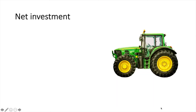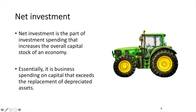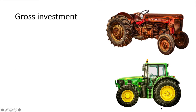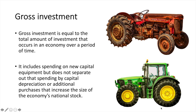Net investment is the part of investment spending that increases the overall capital stock of an economy — essentially, it is business spending on capital that exceeds the replacement of depreciated assets. Gross investment is equal to the total amount of investment that occurs in an economy over a period of time. It includes spending on new capital equipment but does not separate out spending on capital depreciation or additional purchases that increase the size of the economy's capital stock.